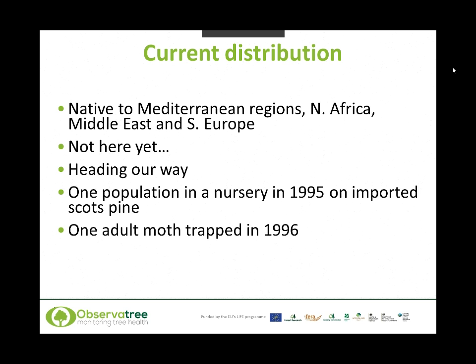The pine processionary moth is native to and until recently was only found in the Mediterranean region, North Africa, and some areas of the Middle East and Southern Europe. It's not here yet, but it has been extending its range across Europe towards the English Channel and it's definitely heading our way. Although the pest is not established in the UK, it has been found here in the past — there was one transient population of larva in a UK nursery in 1995, and an adult moth was also trapped in Berkshire.